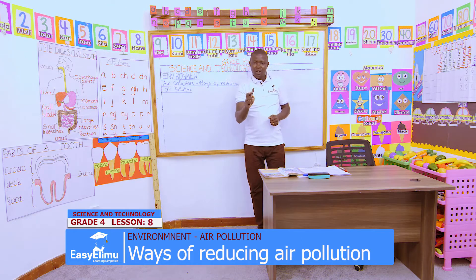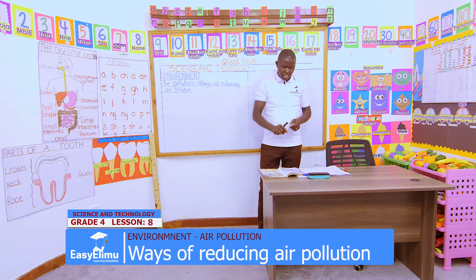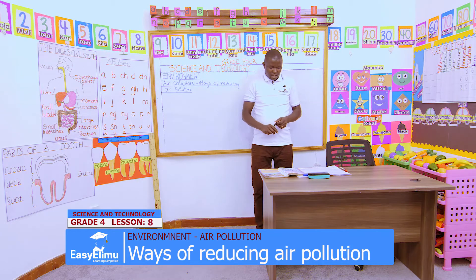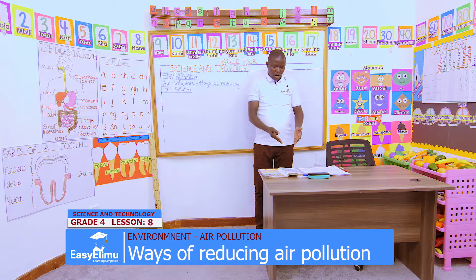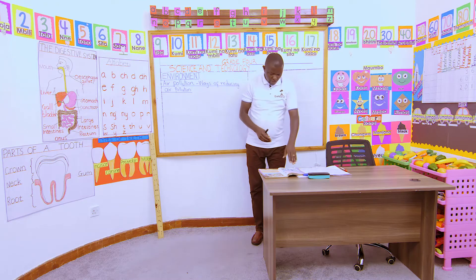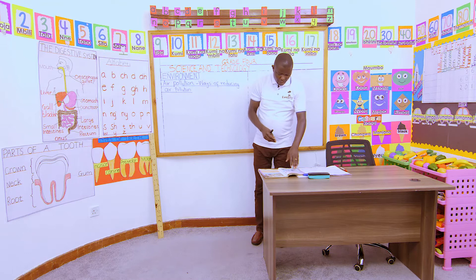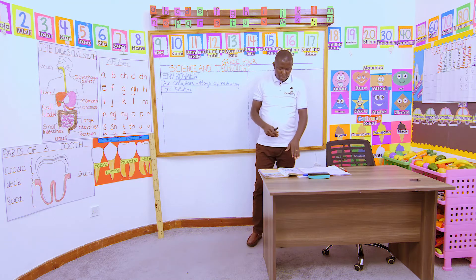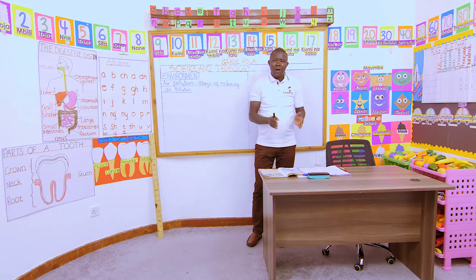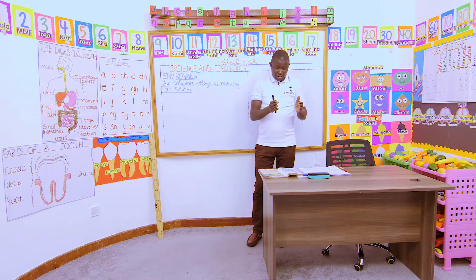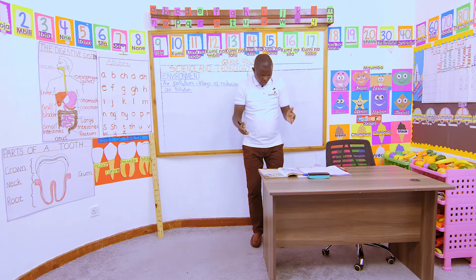Before we continue, in pairs, kindly pay attention to the pictures in our books. We have two pictures. The first picture — what can you see there? What can you see, John?